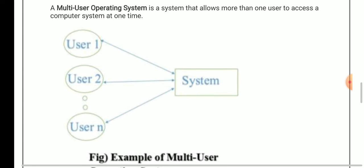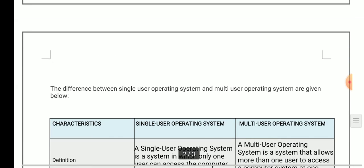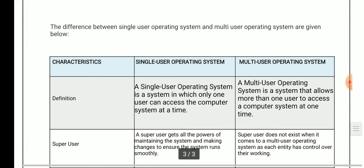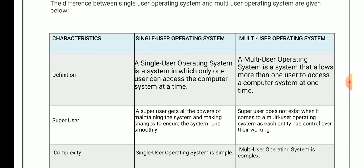Multiple users can use a multi-user system at a time. In a single user operating system, only one user uses the system at a time, whereas in a multi-user operating system, multiple users can access the system simultaneously. In a single user system, there is the concept of a super user who has all the power of maintaining the system, but in a multi-user system, there is no concept of a super user.